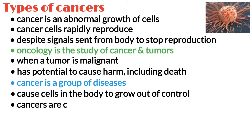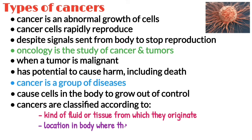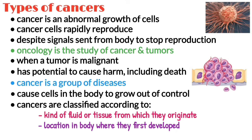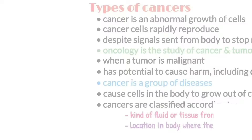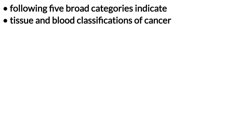Cancers are classified either according to the kind of fluid or tissue from which they originate, or according to the location in the body where they first develop. In addition, some cancers are of mixed types. The following five broad categories indicate the tissue and blood classifications of cancer.